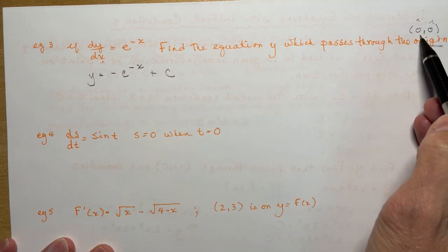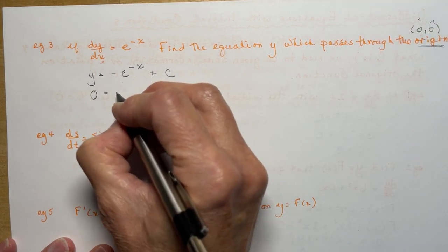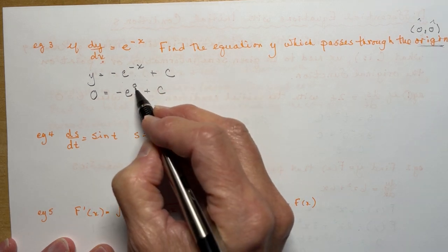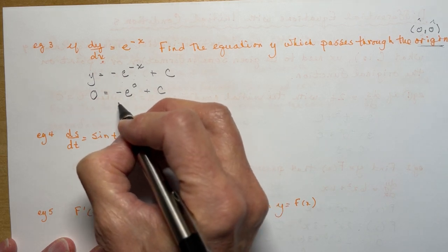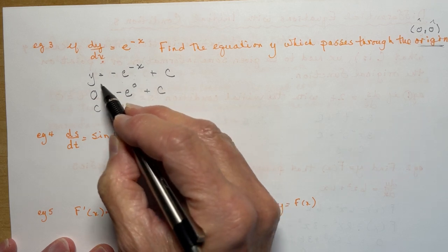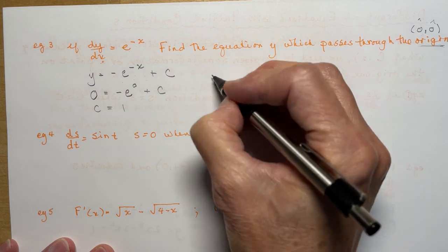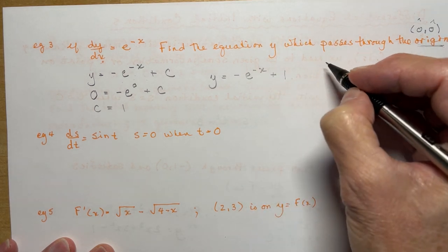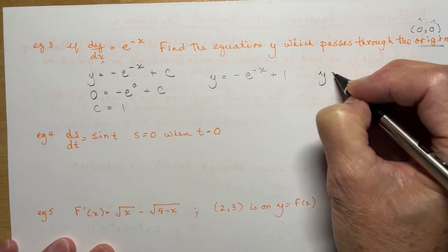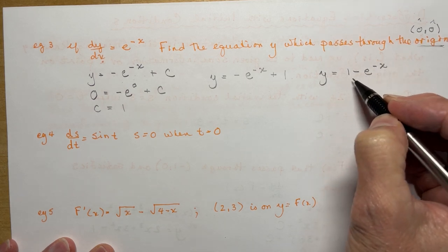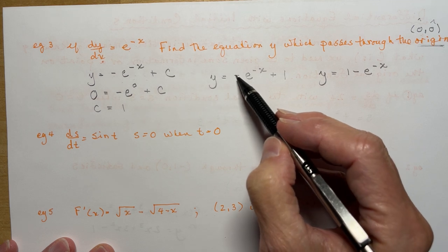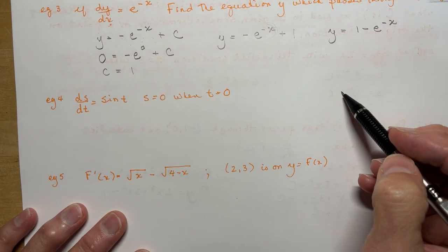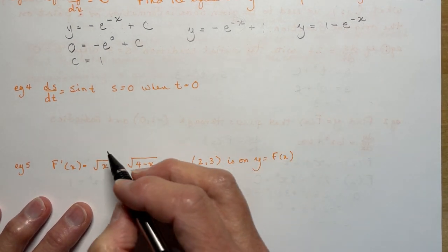They gave me the point (0, 0). So: 0 equals negative e to the negative 0 plus c. Anything to the power of 0 is 1, but I have to multiply by the negative, so that's −1. That means c equals positive 1. So y is equal to negative e to the negative x plus 1, or equivalently y equals 1 minus e to the negative x. Often they write it that way because they don't like to lead an equation with a negative, but it doesn't mean you have to.